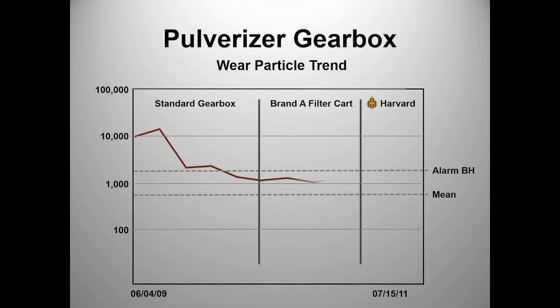Metals in the oil, which indicate scoring of the bearing's internal surfaces, nearly vanished while the Harvard system was at work.